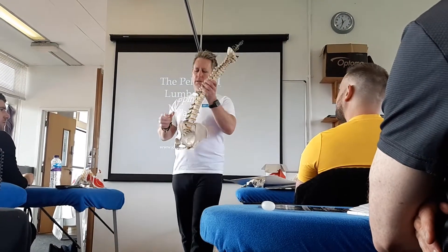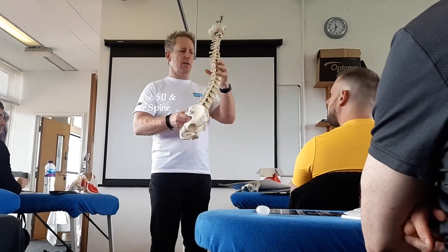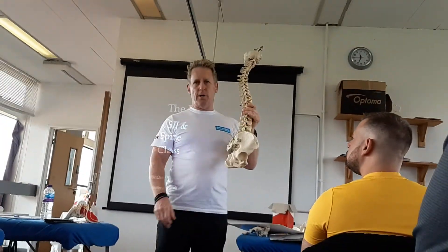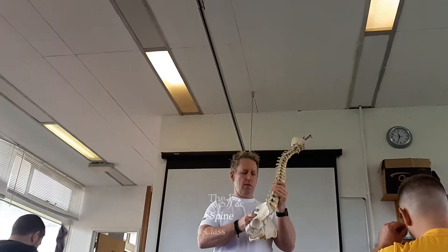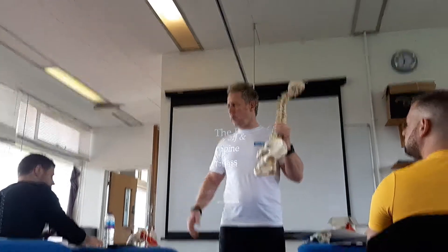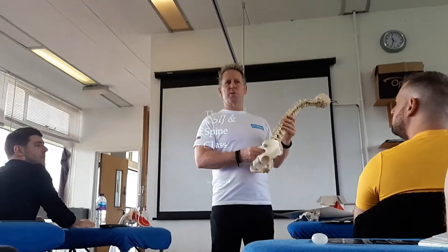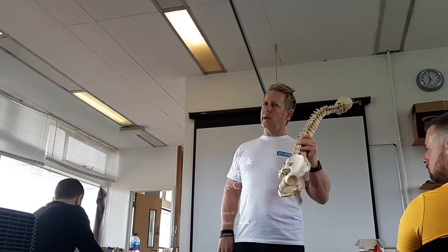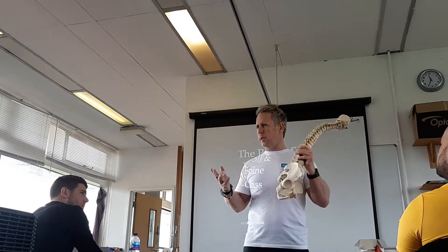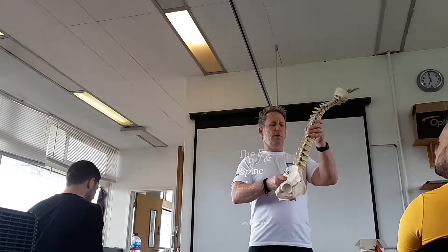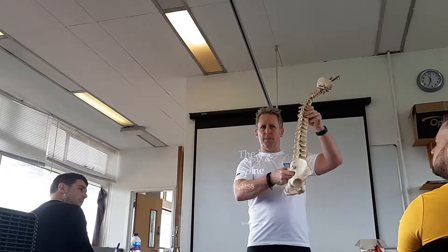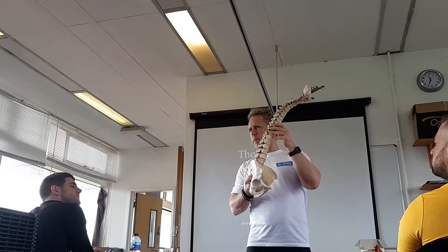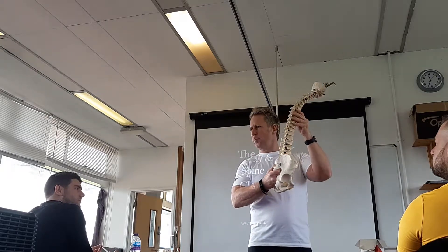We have a chapter on spinal mechanics. In 1918 there was a chap called Fryette - Harrison Fryette - and he named the movement of the spine, calling it the laws of spinal mechanics. He also dictated the position of neutral. Neutral spine is basically where the facet joints are not locked in extension and not in flexion - they are idle between the two positions.